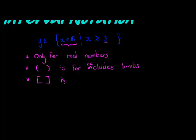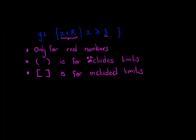Round brackets are for excluded limits while square brackets for included limits.